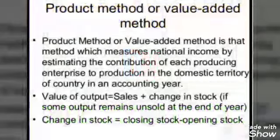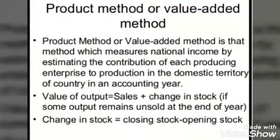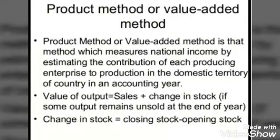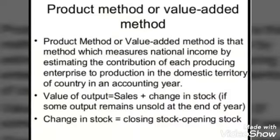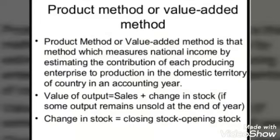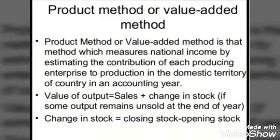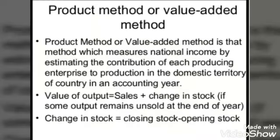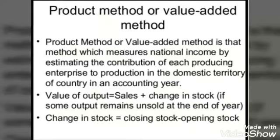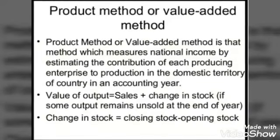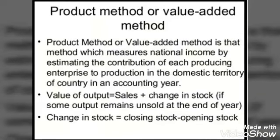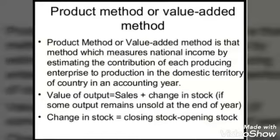In my previous video I have explained how national income is measured in terms of value addition by each producing enterprise during a particular year, where value added is the difference between value of output of an enterprise and the value of intermediate consumption. To do these numericals you need to thoroughly study what items are to be included and what are to be deducted under the value added method, which is possible only when you have gone through the equation thoroughly.